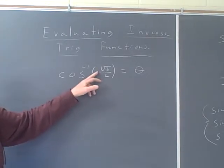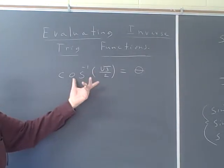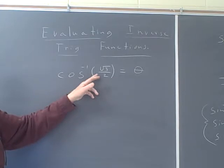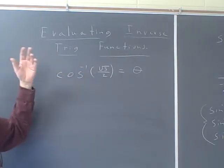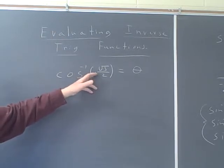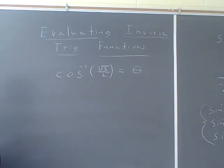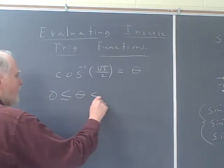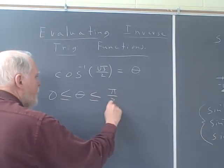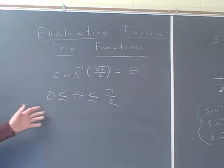Well, if the argument is positive, then theta is in the first quadrant. And that's true for every one of these that you go to evaluate, whether it's cosine inverse, sine inverse, cosecant inverse, whatever. If the argument is positive, then theta has to be greater than or equal to 0 or less than or equal to pi over 2. So that's the first thing.